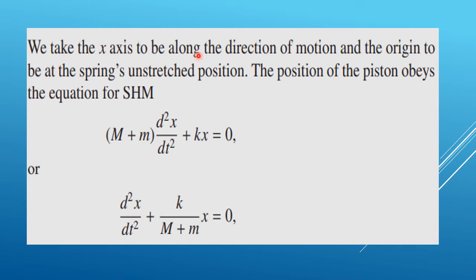We take the x-axis to be along the direction of motion and the origin to be at the spring's unstretched position, that is x₀. The position of the piston obeys the equation of simple harmonic motion: (M + m) d²x/dt² + Kx = 0. Dividing by (M + m), we get the simple harmonic equation: d²x/dt² + K/(M + m) · x = 0.